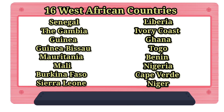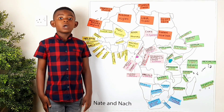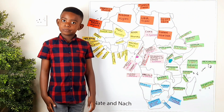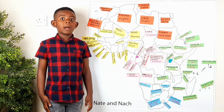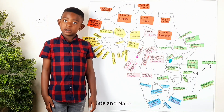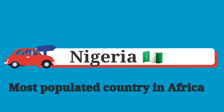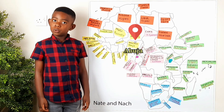West African countries. West Africa has 16 countries and I'm just going to tell you about some fun facts. The largest country by population is Nigeria and it's found in West Africa. The capital of Nigeria is Abuja.